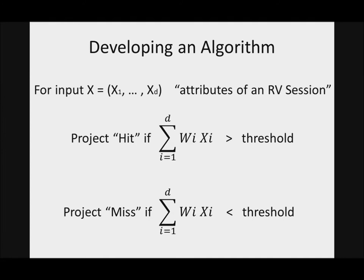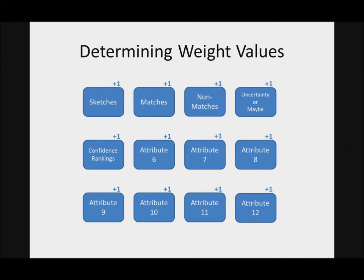Basically what it does is that there's an input X, and X being the confidence ranking. The second X can mean the disparity, but these are the attributes of an ARV session. Each of these attributes are given a certain weight and there's a certain threshold. And if the sum of all these attributes and weights are greater than the threshold, then you can project a hit. But if it's less than the threshold, we project a miss. We don't know the weight values and we don't know the threshold.